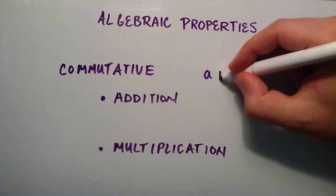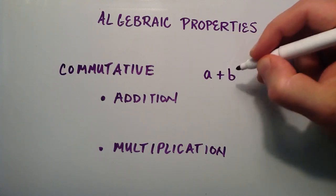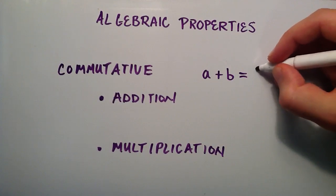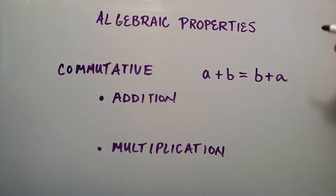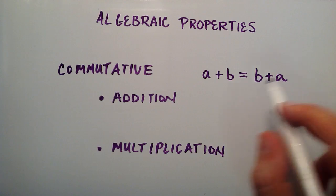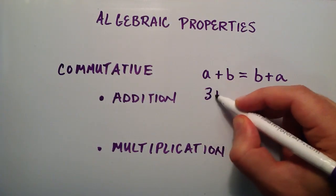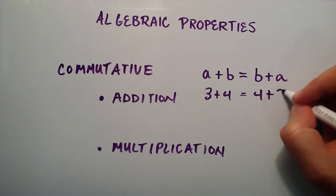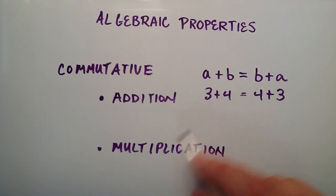That's like saying some number A plus some number B can be changed by moving A and B into different places, commuting them, so that it reads B plus A. This is like saying 3 plus 4 is the same thing as 4 plus 3. We just change the order. We commute the numbers.